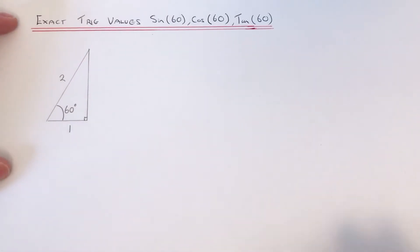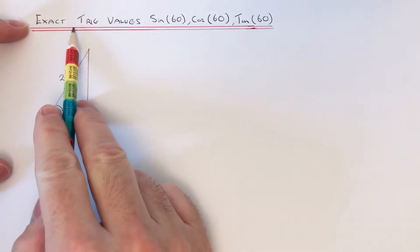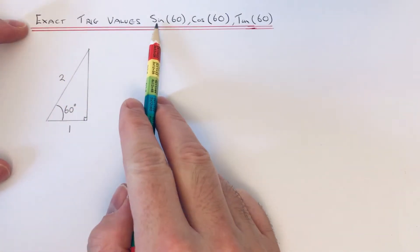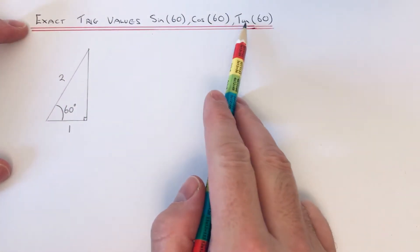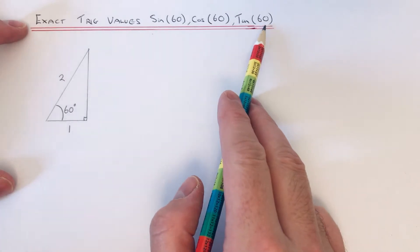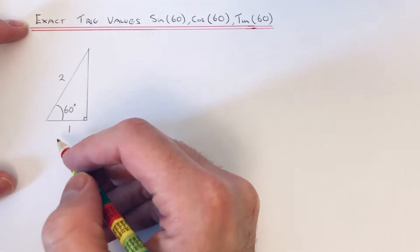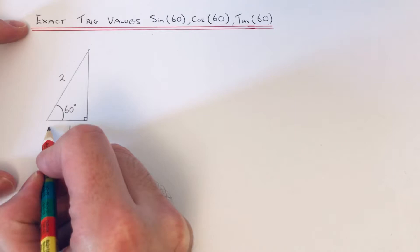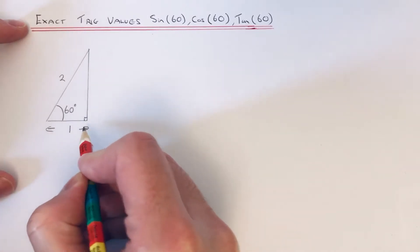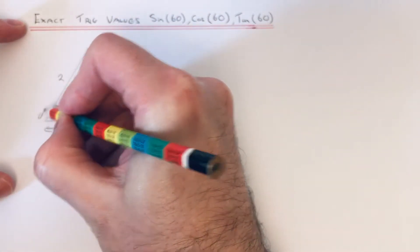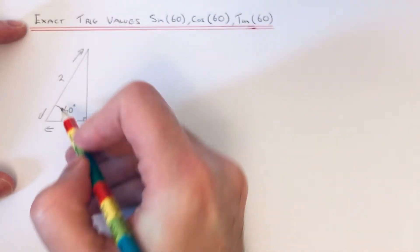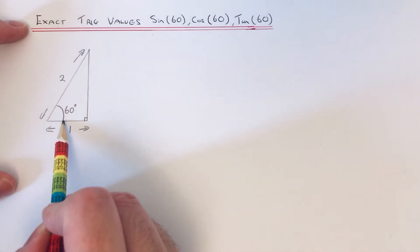Hi guys, welcome back. This is Maths 3000. Today I'm going to show you how to remember the exact trig values for sin 60, cos 60, and tan 60. To do this, you'll need a right angle triangle with a base length of one unit and a hypotenuse of two units, and this angle here would be 60 degrees.